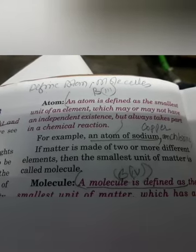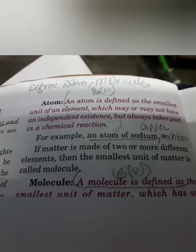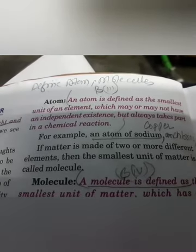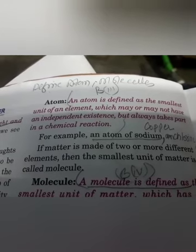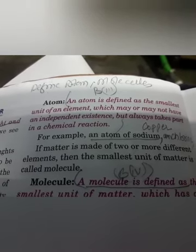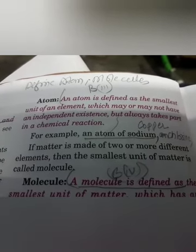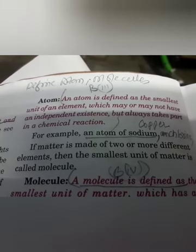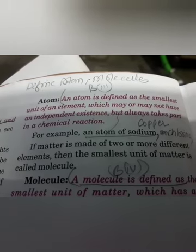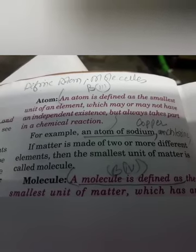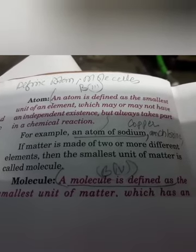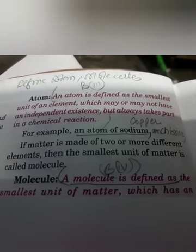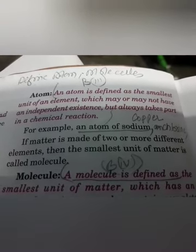The next topic we will learn is atom. What is an atom? An atom is defined as the smallest unit of an element which may or may not have an independent existence, but still takes part in a chemical reaction. In the book, an example of sodium is given. But for your information, students, in the examination you may be asked for more than one example. In that case you can write an atom of sodium or an atom of chlorine. So students, learn more than one example.